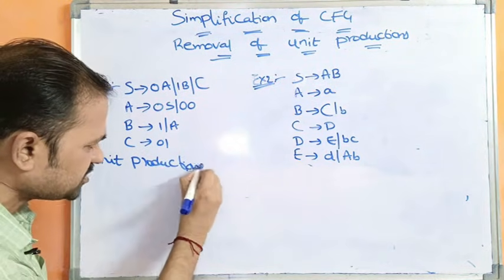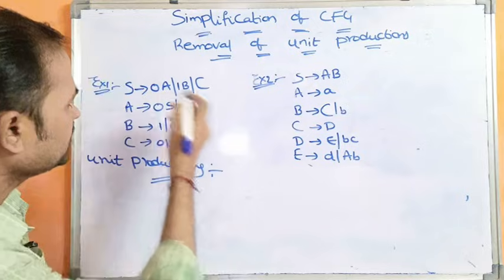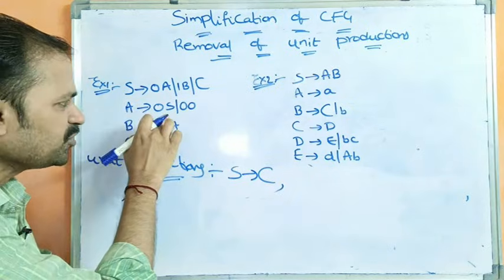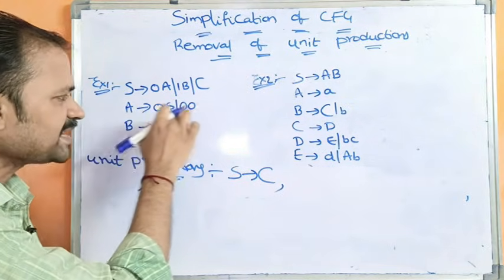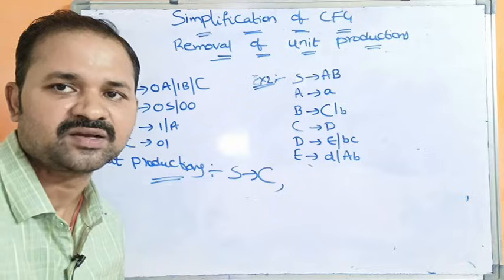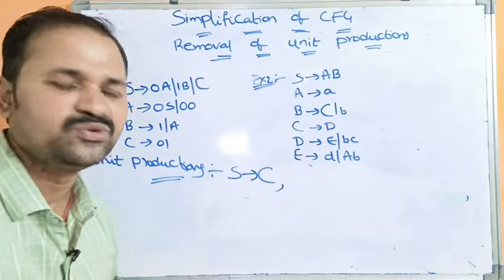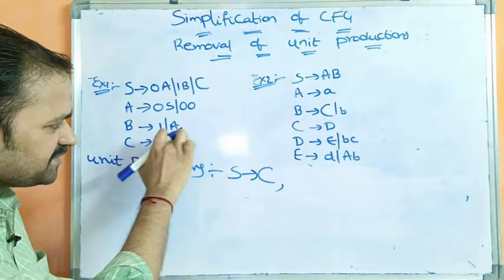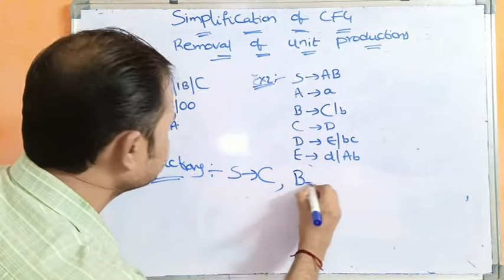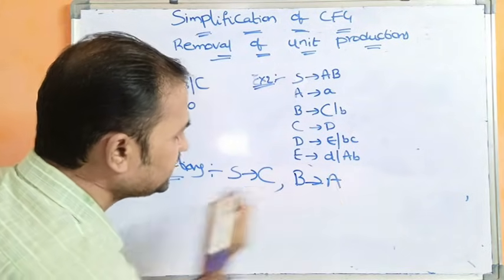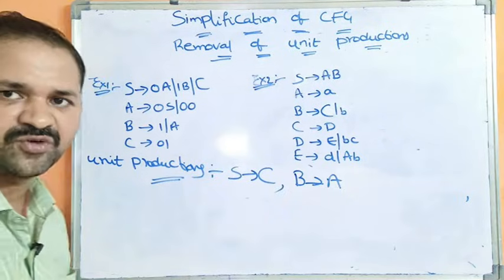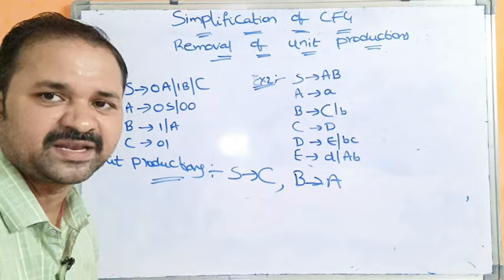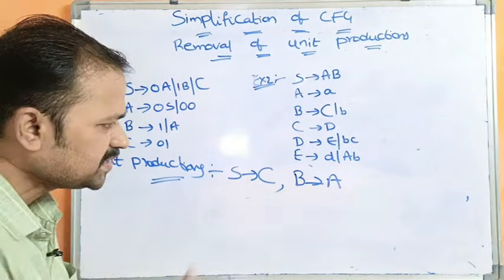Let us identify the unit productions. S produces C — here we have only one non-terminal on the right-hand side, so S produces C is a unit production. For A produces 0A or 00, the right-hand side does not contain a single non-terminal alone, so no unit production there. B produces 1 or A — here B produces A is a unit production, since the right-hand side is a single non-terminal. C produces 01 has no single non-terminal on the right-hand side. So the two unit productions are S produces C and B produces A.